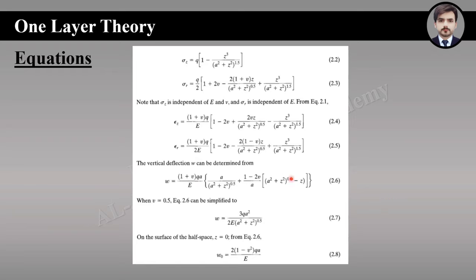Equation 2.6 is the main vertical deflection equation. If we put Poisson ratio as 0.5, equation 2.6 is modified into equation 2.7. Equation 2.7 is used to find the vertical deflection at any depth. If we want the deflection at the surface, we put z = 0, giving us equation 2.8, which is used specifically when Poisson ratio equals 0.5.